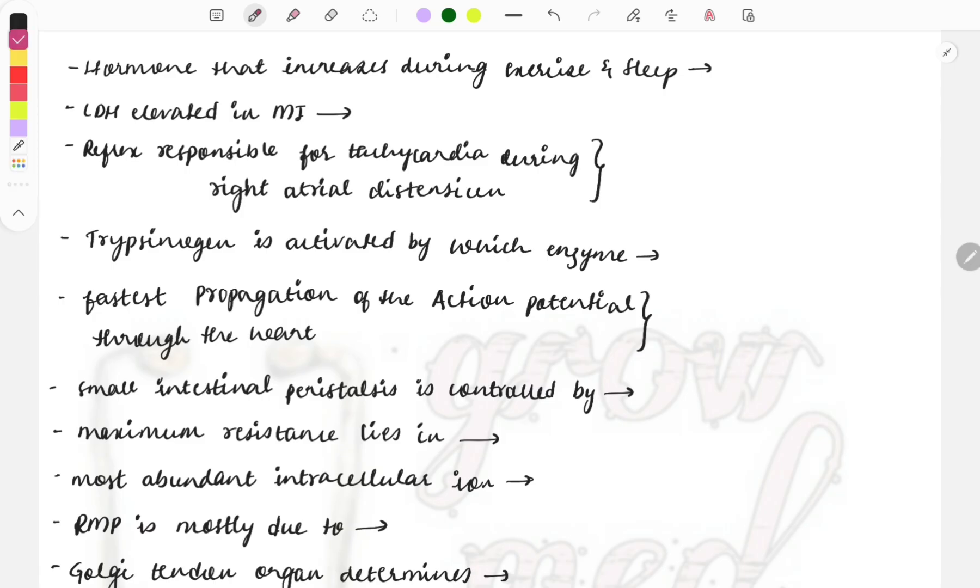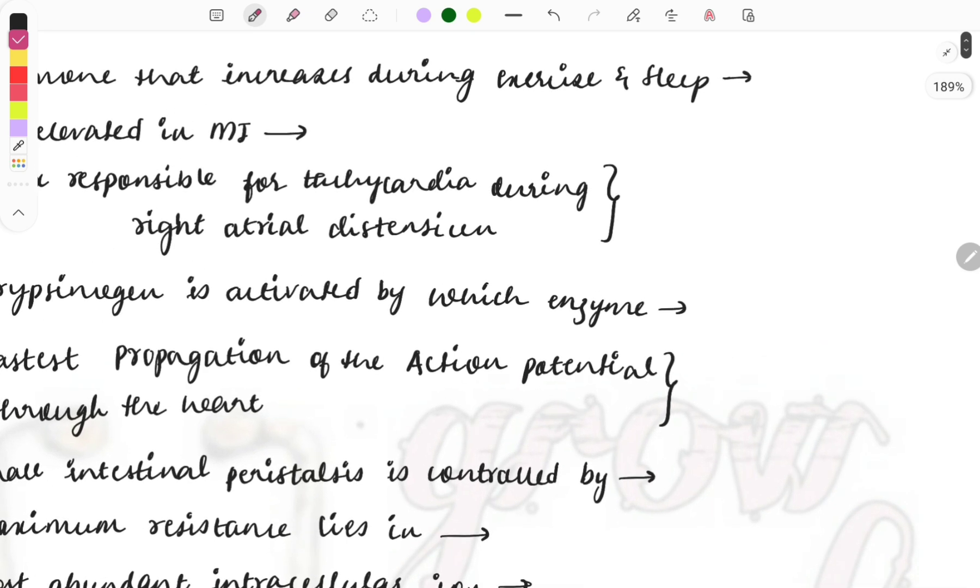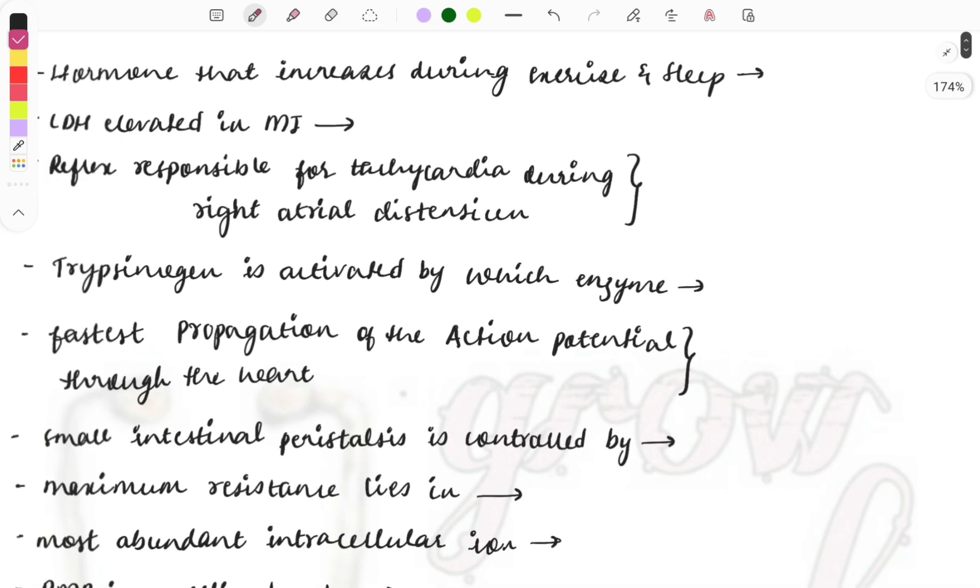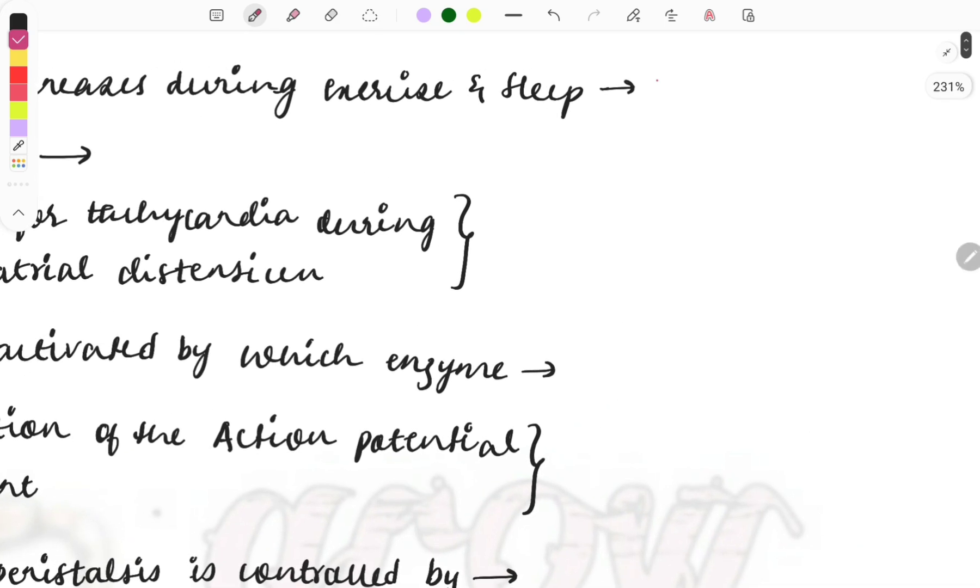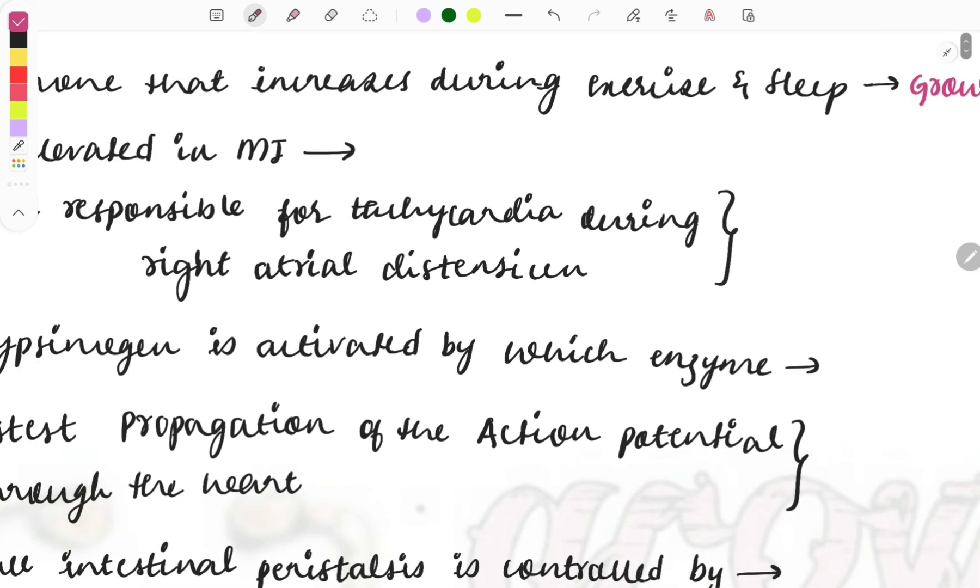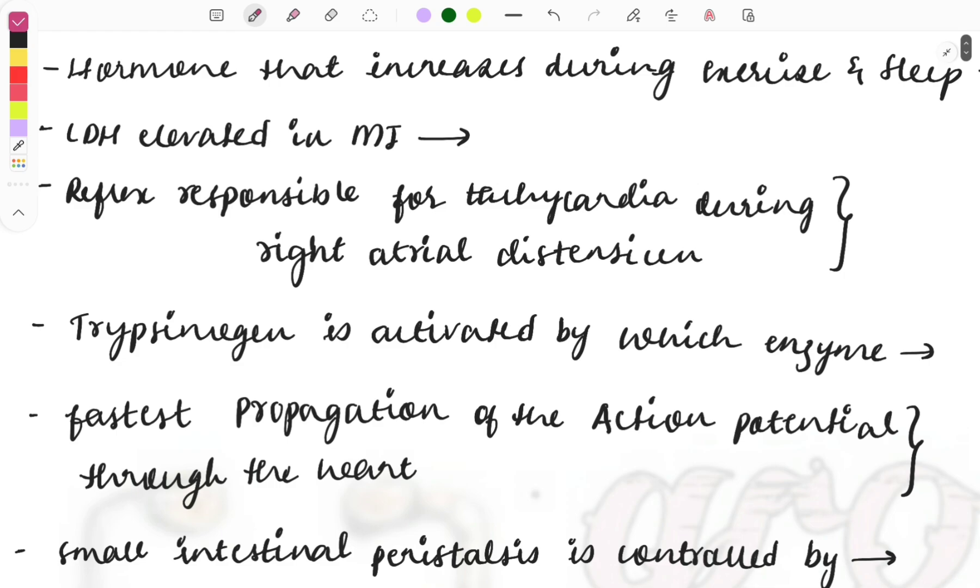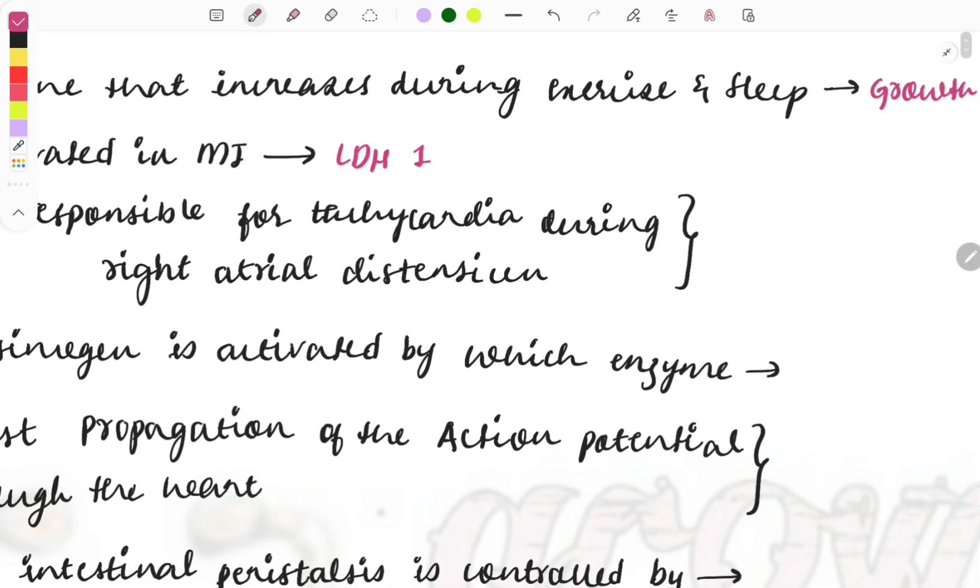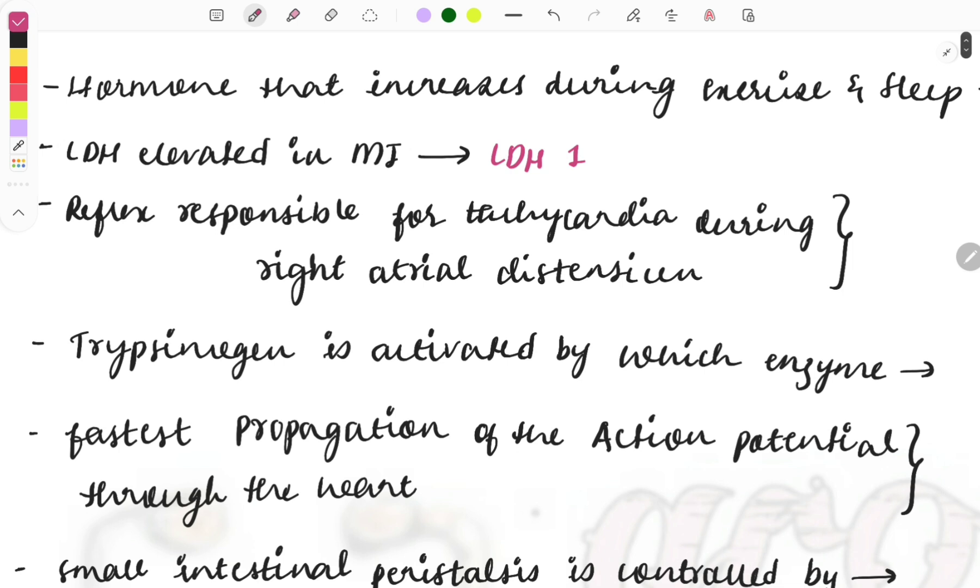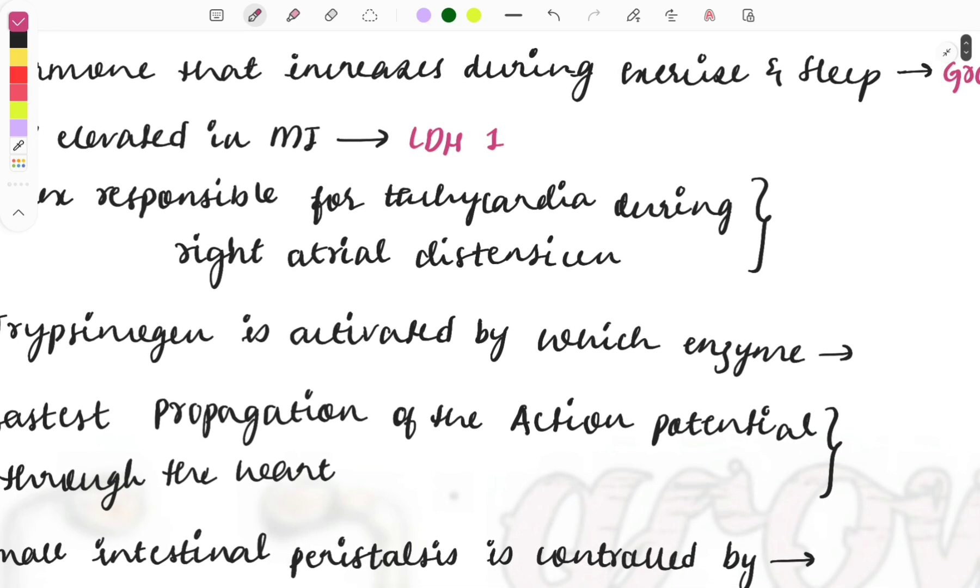So in this video we'll discuss about the physiology one-liners. The hormone that increases during exercise and sleep, which hormone will be increasing? It is the growth hormone. This question was recently asked in the exam, I think in the January exam, that a hormone which is increased when you're sleeping and during the exercise is the growth hormone. Then LDH that is elevated in case of MI is the LDH1. So this LDH1 is present in the cells and whenever there is MI, there will be necrosis, so death of the cells, these LDH will be released in the serum causing the elevated levels.